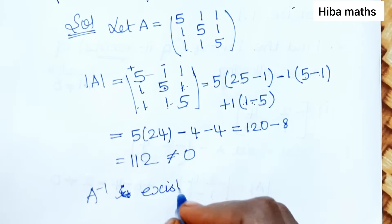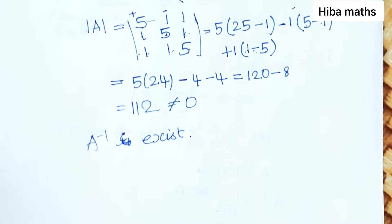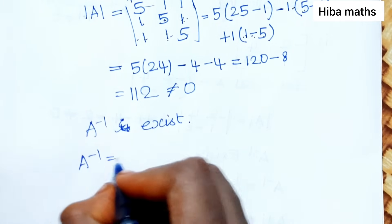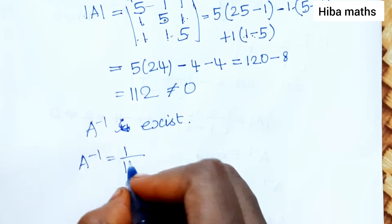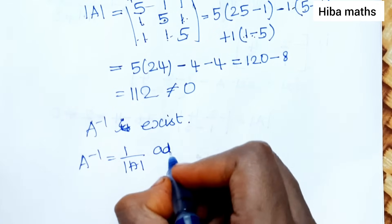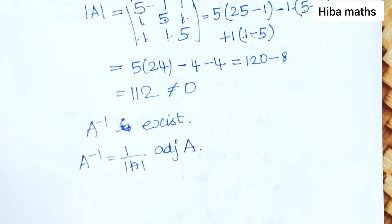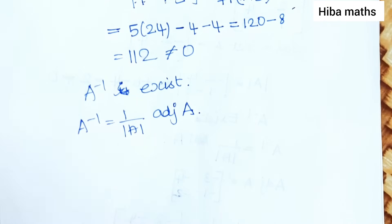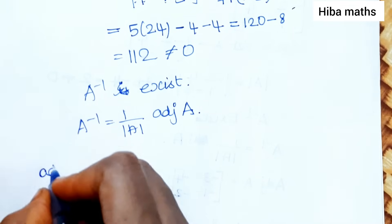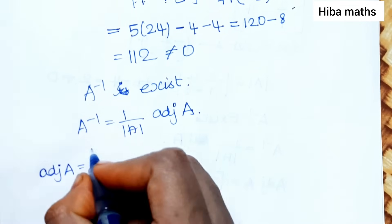Since the determinant is not equal to 0, A inverse exists. The formula is: A inverse equals 1 by modulus of A into adjoint of A. Now we find the adjoint of A.